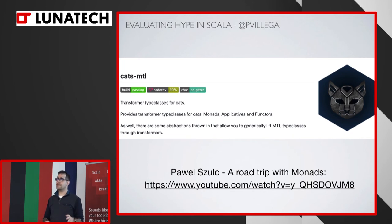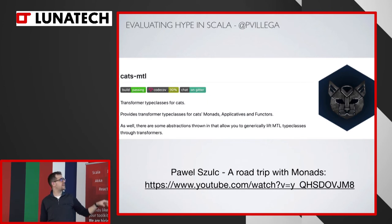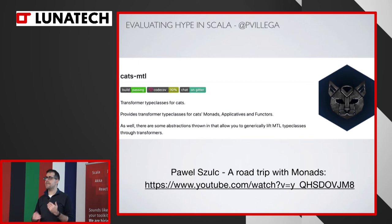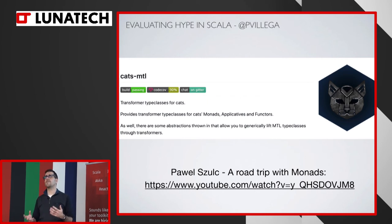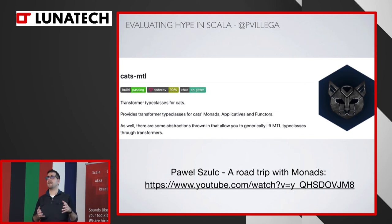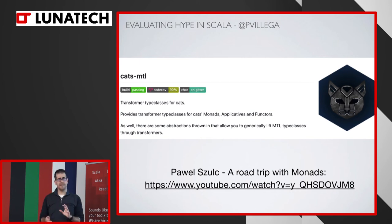People also talk about MTL when they talk about Tagless. MTL is a concept that comes from Haskell and its name has evolved in meaning. Nowadays it's something like the Tagless Final implementation of an abstraction of an effect — for example, a functor which abstracts over something that can be mapped. So you could have something that abstracts over the concept of reading configuration, or raising an error. There's a really good talk about MTL and its benefits that I'd recommend watching.